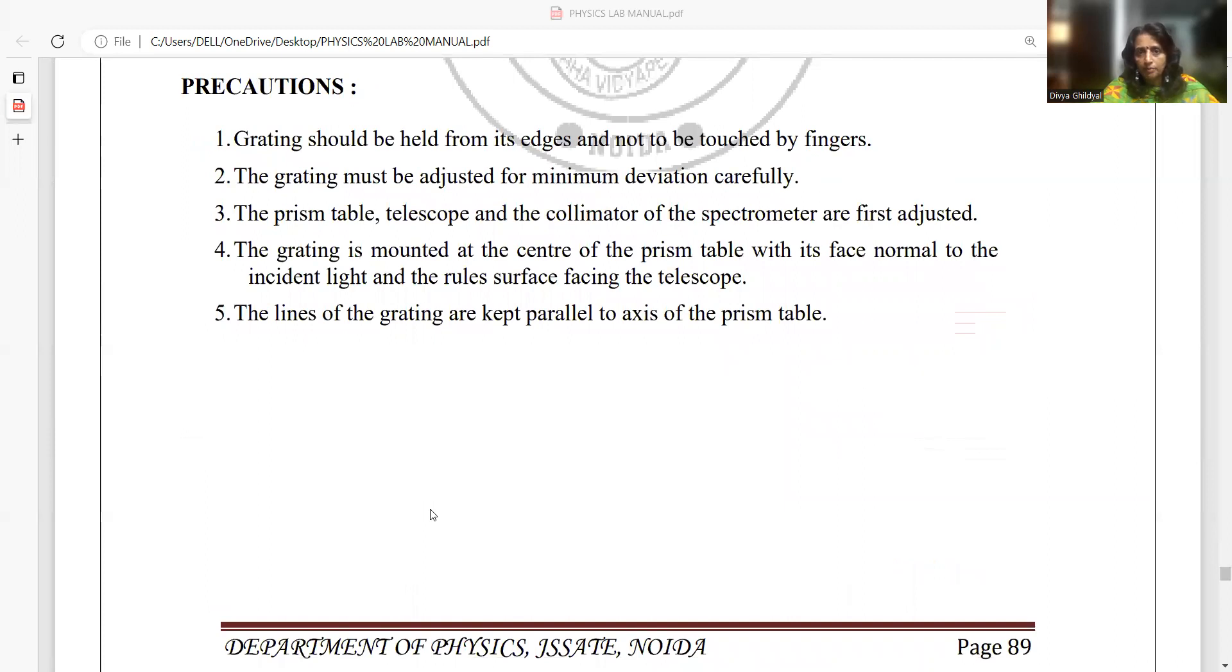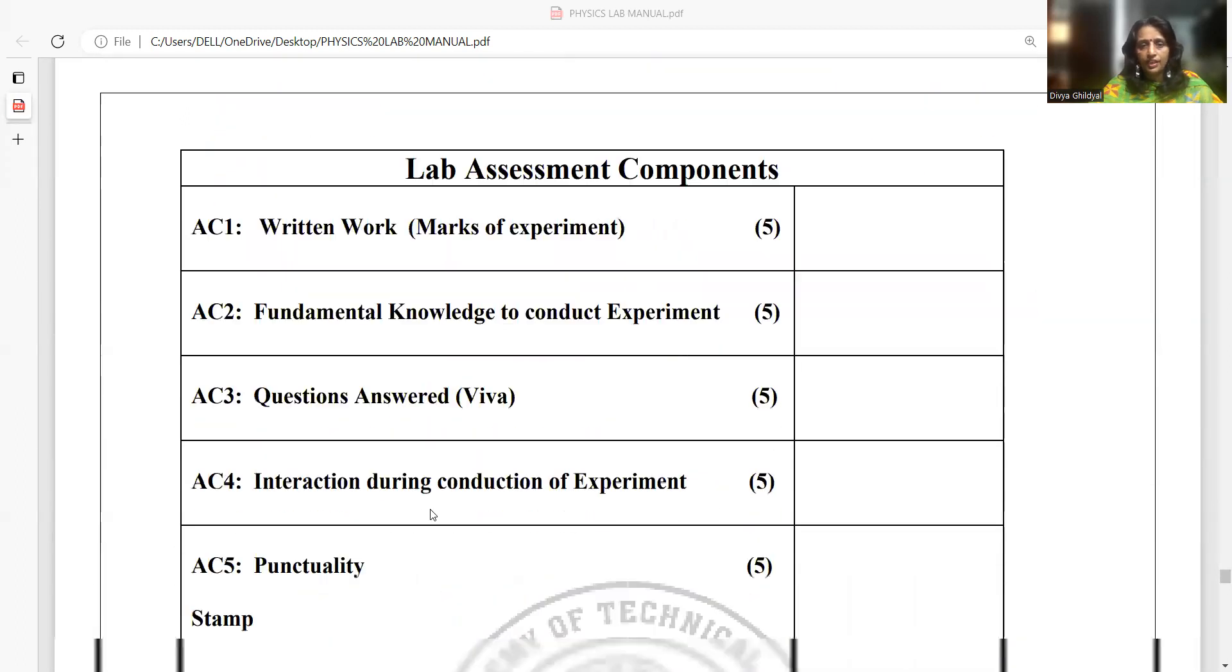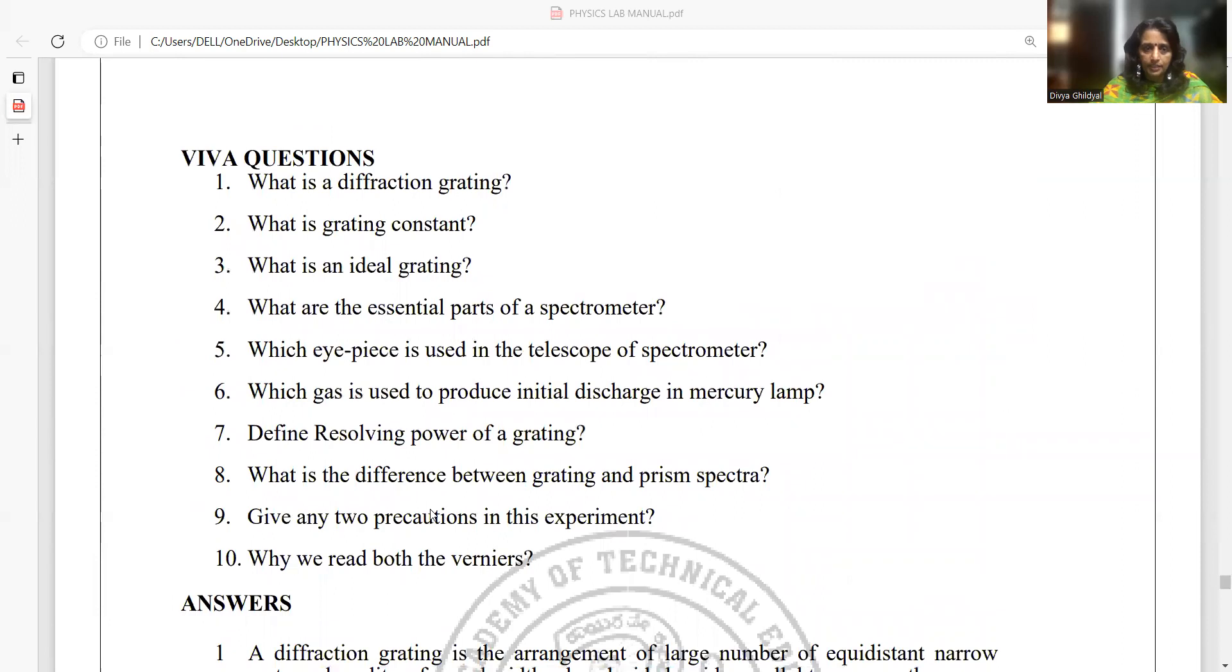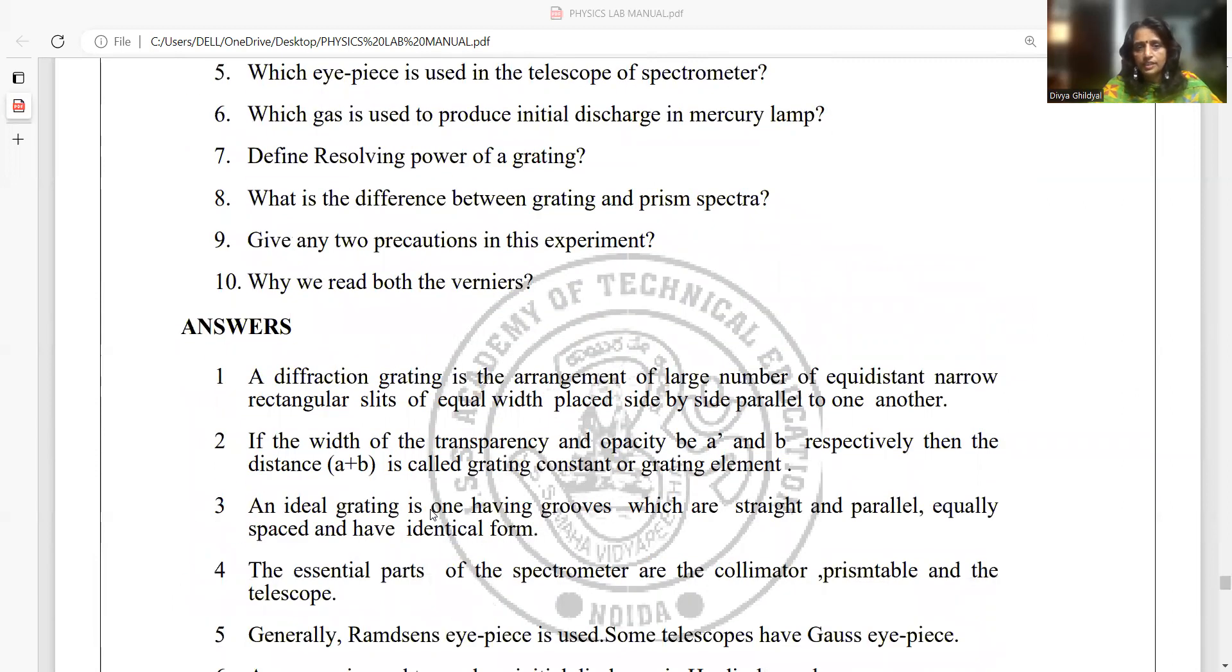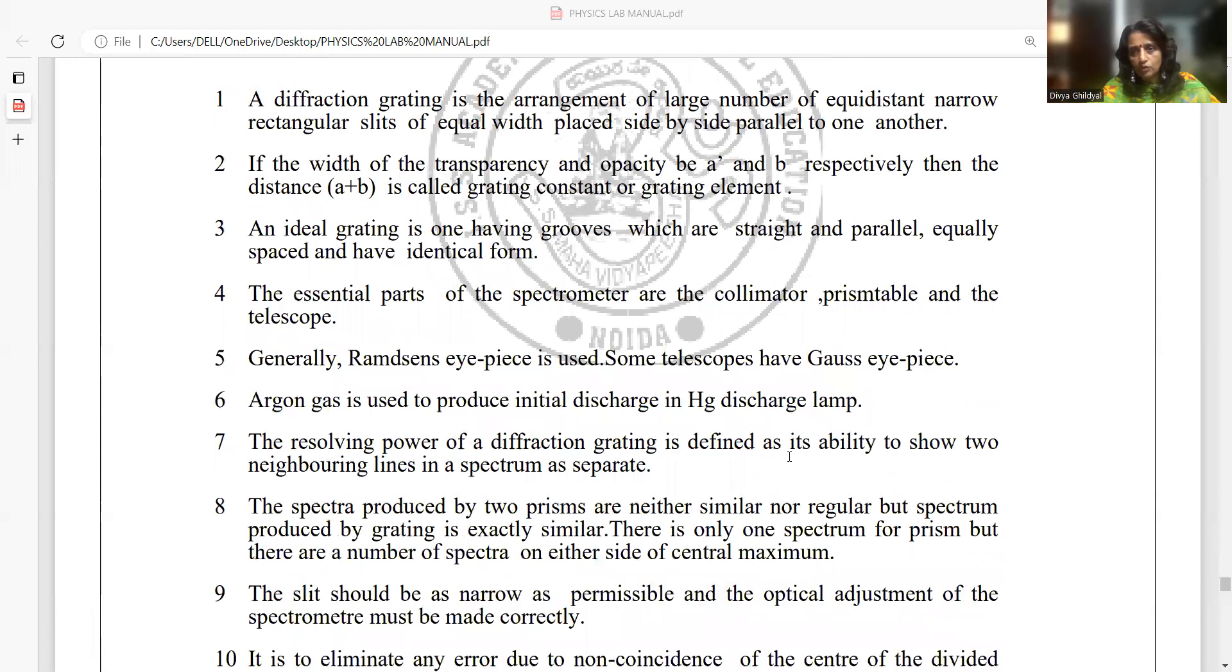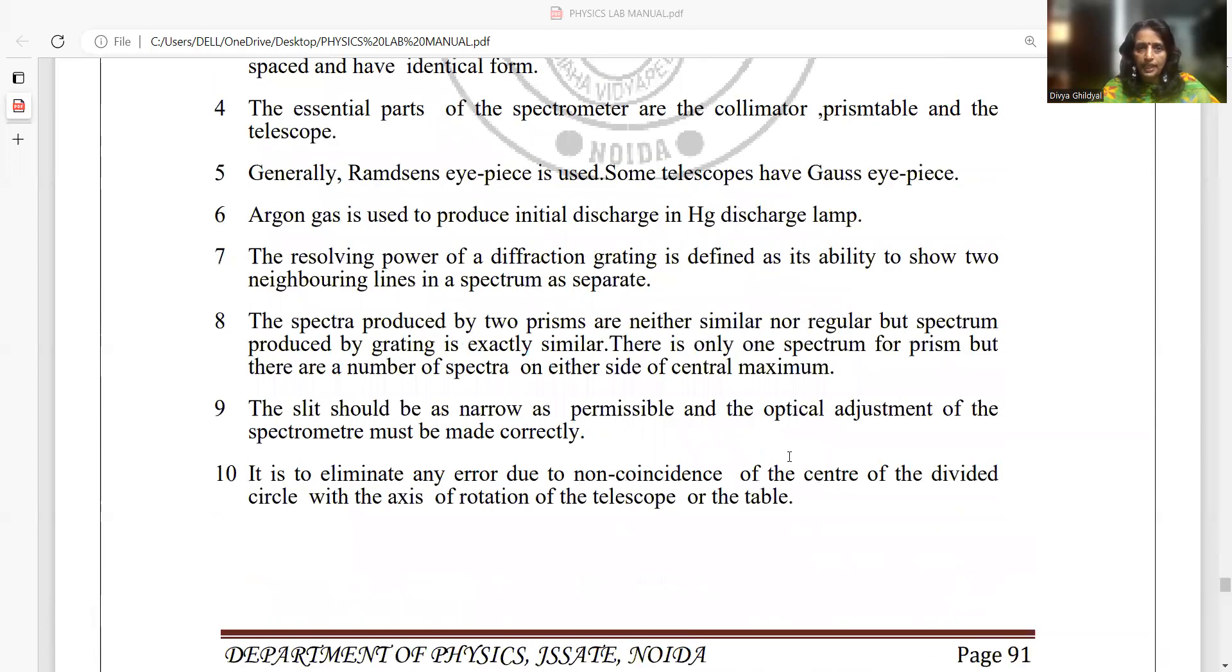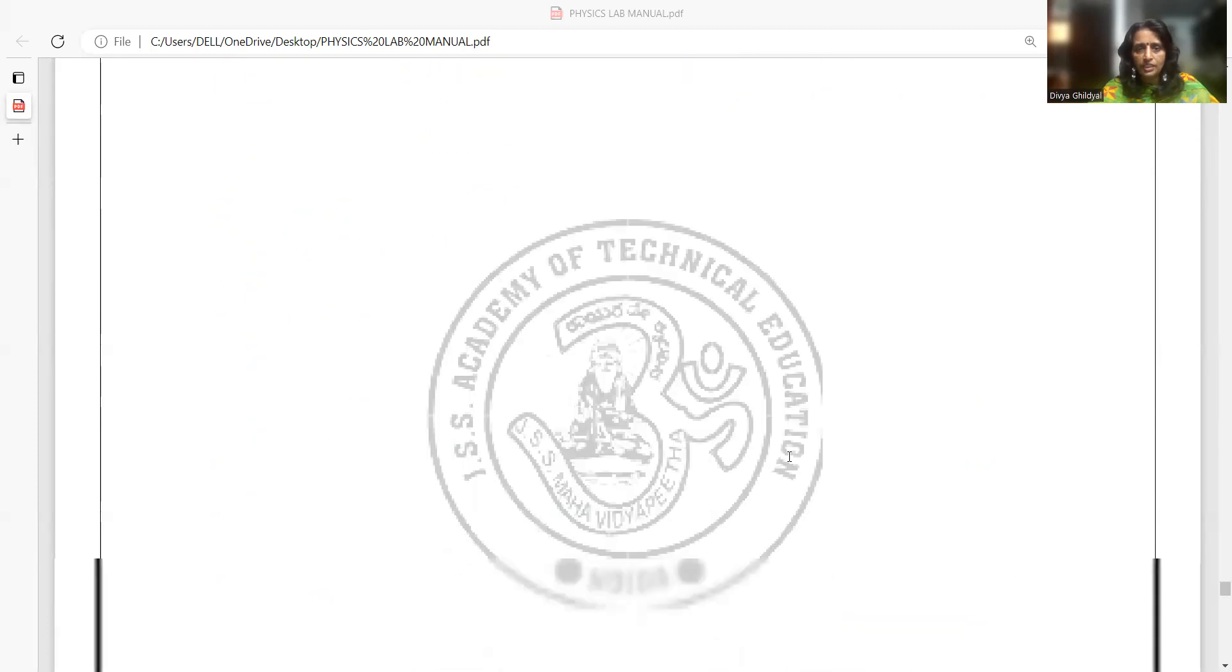Grating must be set for minimum deviation carefully. Prism table, telescope, collimator, all should be adjusted properly because optics experiments adjustment is a very important part of all my optic experiments. Diffraction grating is the arrangement of large number of equidistant narrow rectangular slits of equal width placed side by side parallel to one another. If the width of the slit is A and opaque space is B, then A + B becomes the grating element. Essential parts of a spectrometer are collimator, prism table, and telescope. Ramsden's eyepiece is usually used in all telescopes. And for my mercury vapor lamp, argon gas has been used which is giving me as the white light source.